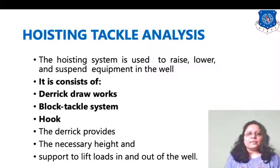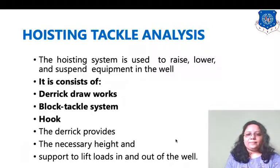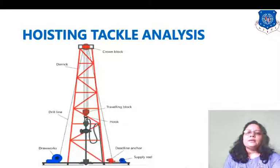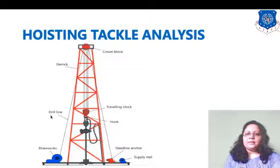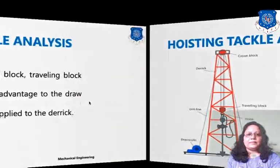The basic function of the draw works is to provide the necessary height and to support lifting the load in and out. The hoisting tackle system consists of different parts: the crown block, draw works, drill line, traveling block, hook, deadline anchor, supply reel, and draw box.